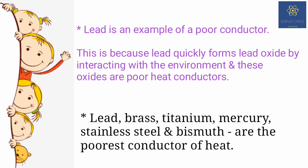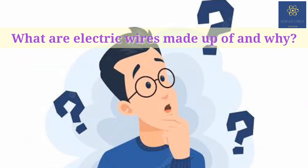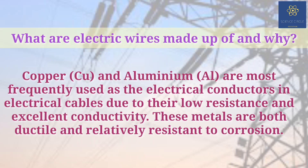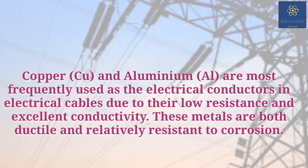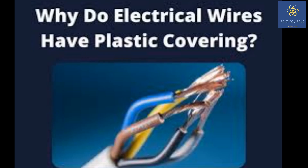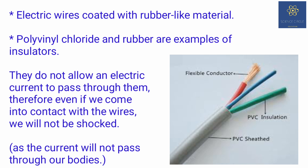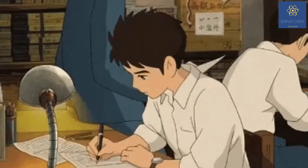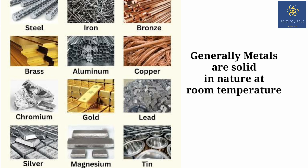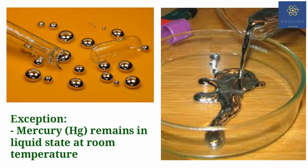Electric wires are made of copper and aluminium because they are good conductors of electricity. Electric wires in homes are covered with polyvinyl chloride (PVC) coating because it acts as an insulator or bad conductor of electricity. Most metals like iron, copper, aluminium, gold, and silver are solid at room temperature. Mercury, however, remains in a liquid state at room temperature and is used in thermometers.